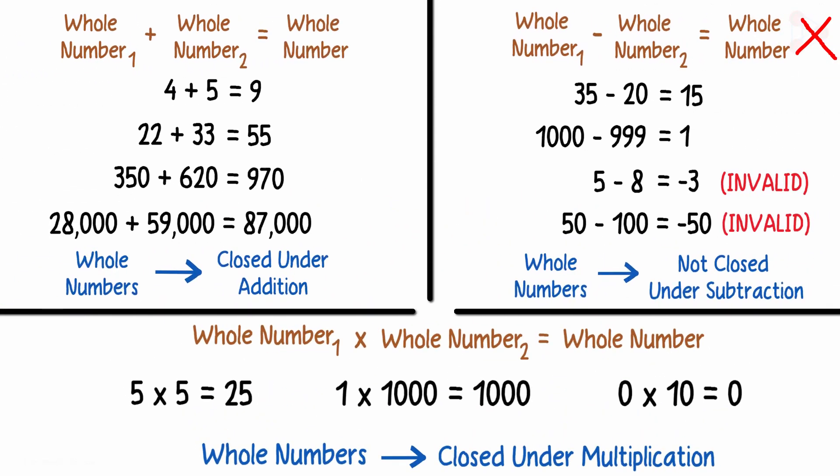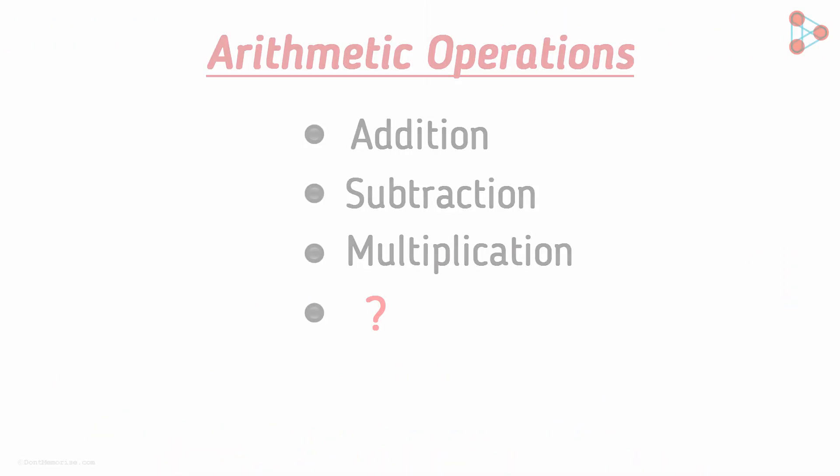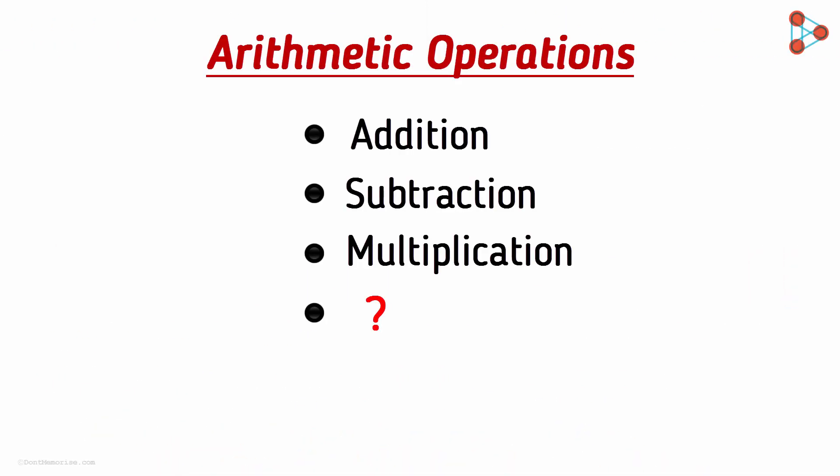Here's a quick recap of what we studied so far in this video. We learnt that whole numbers are closed under addition, not closed under subtraction and closed under multiplication. These three are arithmetic operations that we commonly use. Is there another one? Which is the fourth most common operation that you know of? It's division.